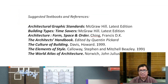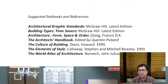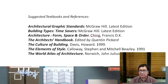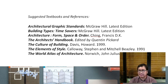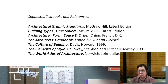Suggested textbooks and references include: Architectural Graphic Standards (McGraw-Hill), Building Types and Time-Savers, Architecture: Form, Space, and Order by Francis Ching, The Architect's Handbook, The Culture of Buildings by David Howard, The Elements of Style by Calloway Stephen and Mitchell Beasley, and The World Atlas of Architecture by Norwich. Try to find soft copies online — most of our exercises are researchable using these and other resources, but I strongly recommend reading these books.